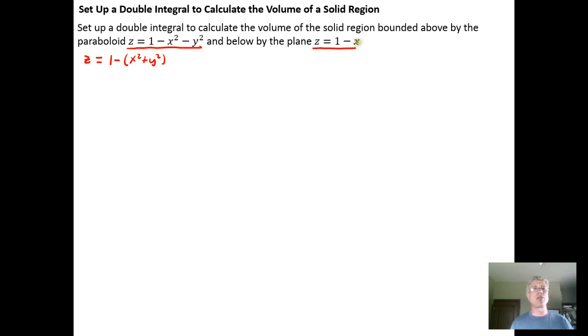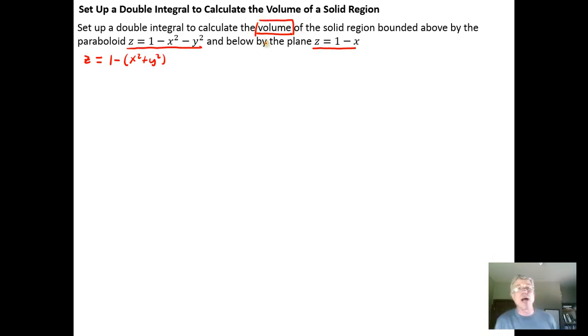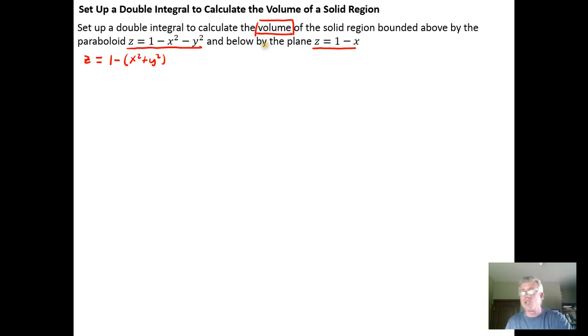So this plane is going to be running parallel to the y-axis. We know two pieces of information just by thinking about those two things. The first thing is that the paraboloid has symmetry with respect to both the xz and the yz planes. And because we're parallel to the y-axis, we actually have symmetry with respect to the xz plane.